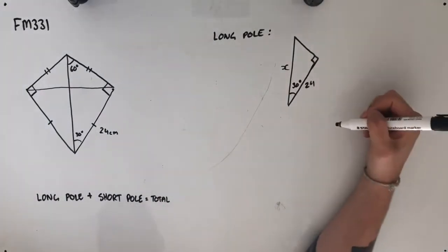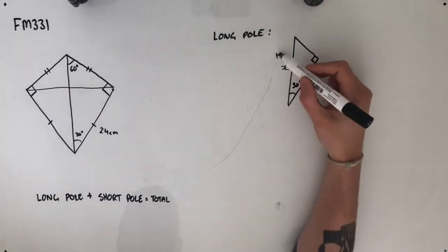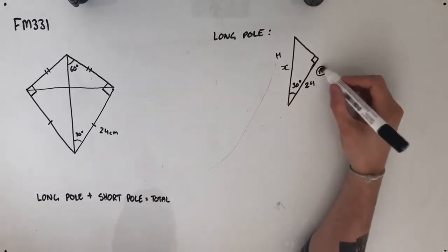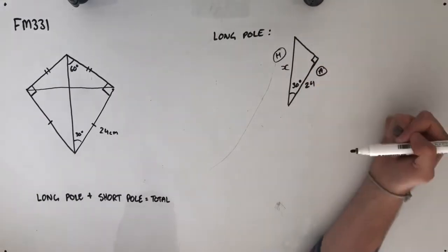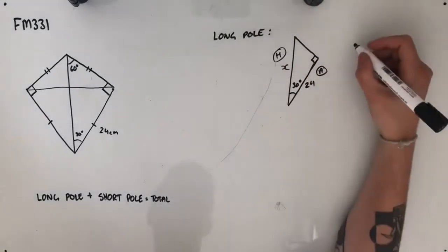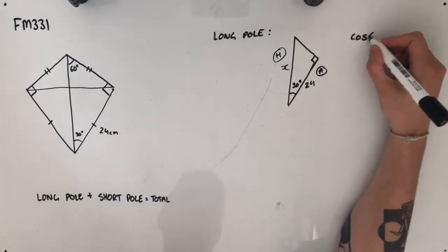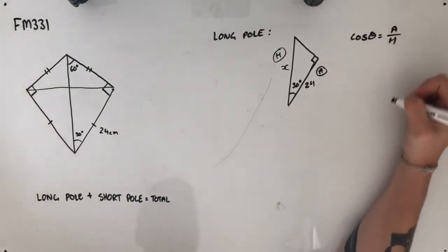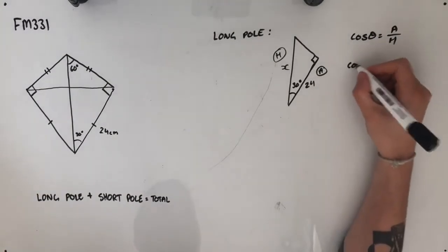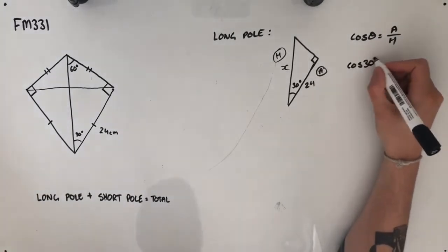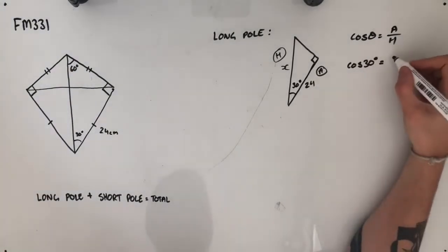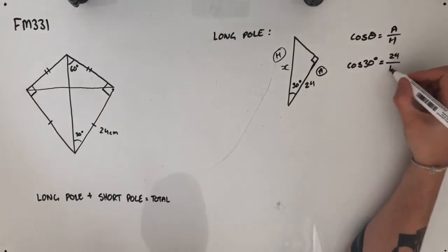Now this is of course a right angle triangle. So labeling these sides, I see that I would need to use the adjacent and hypotenuse sides. So I know that I'm going to be using cosine.